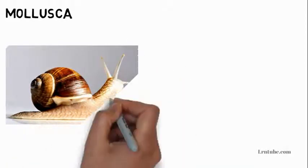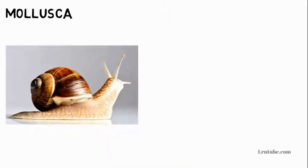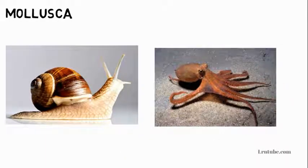Mollusca: They have soft unsegmented bodies with tentacles on their heads. They possess a muscular foot adapted for crawling or burrowing. Their body is covered by a soft tissue called a mantle. Some have calcareous shells, like snails, while others like octopus and slug do not. Some are aquatic while others are terrestrial. Their eyes and tentacles are used for sensitivity. Examples: snail, squid, and octopus.